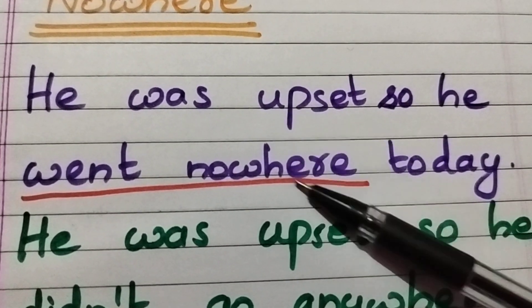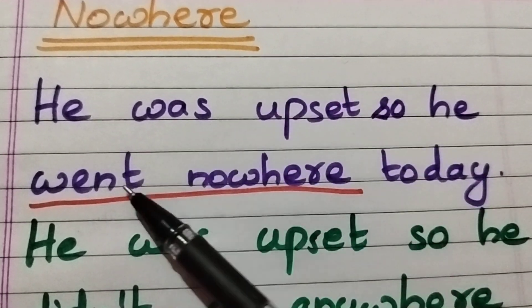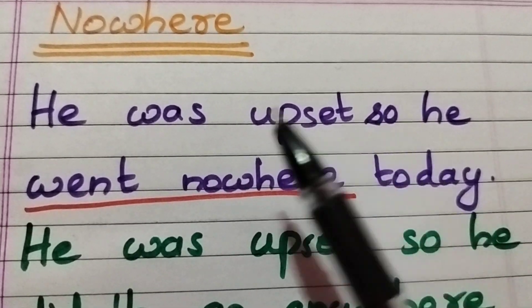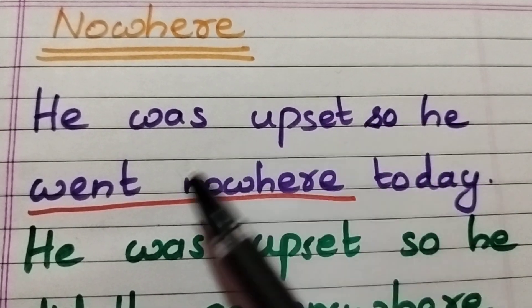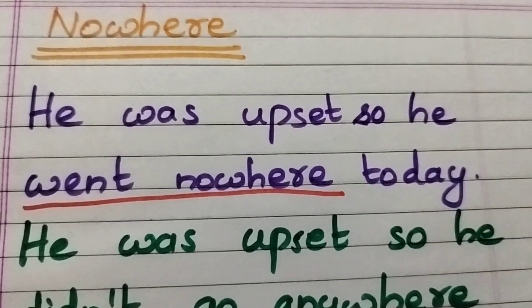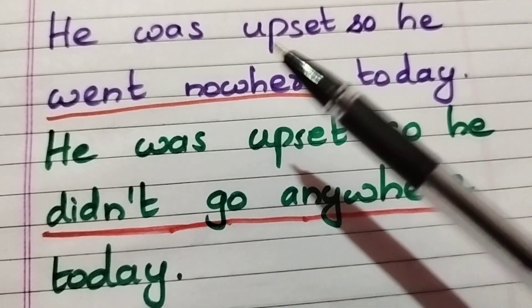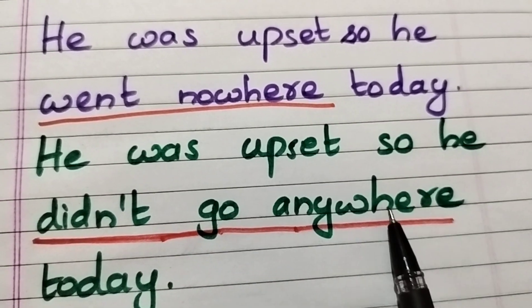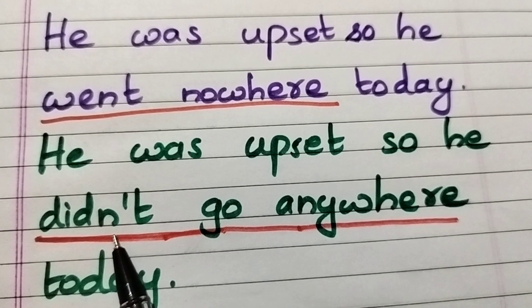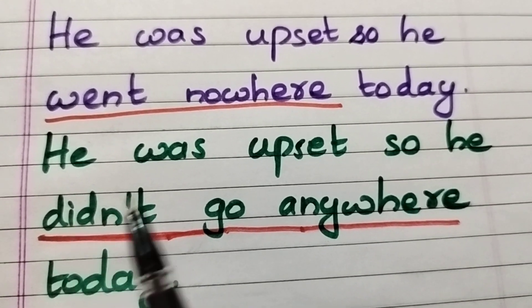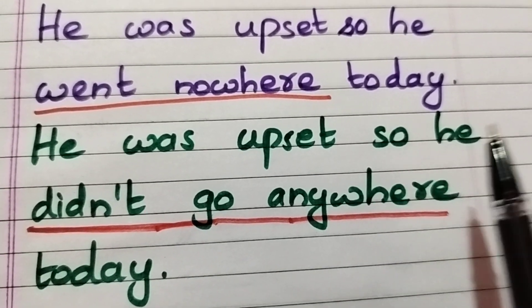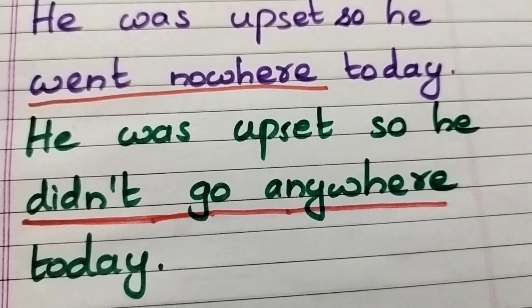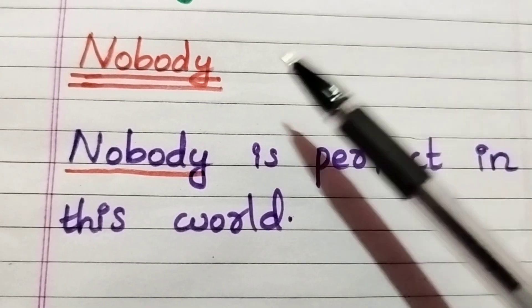'Nowhere' is a negative word. An example: 'He was upset so he went nowhere today.' Instead of 'went nowhere,' you can also write 'didn't go anywhere' — 'didn't' means 'did not,' so that is also a negative sentence: 'He was upset so he didn't go anywhere today.'